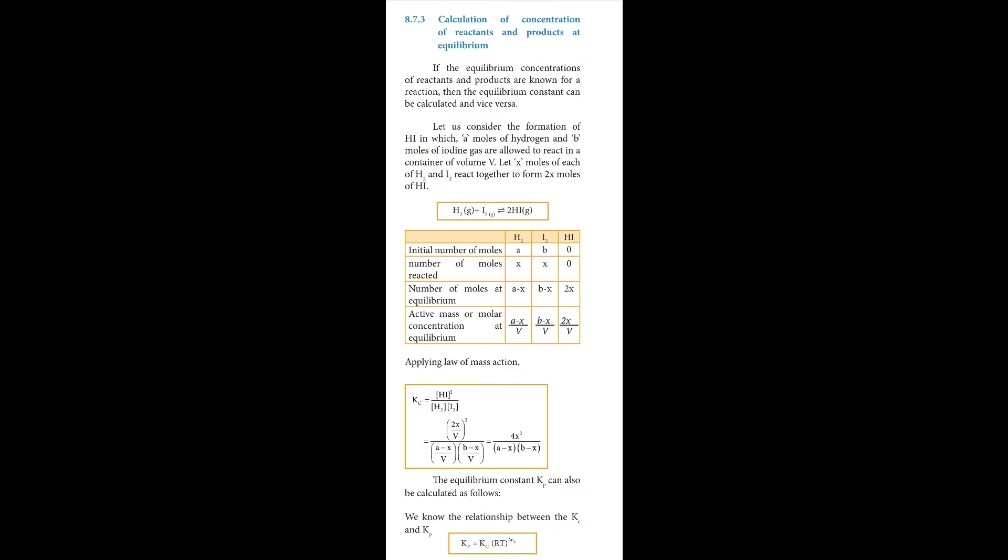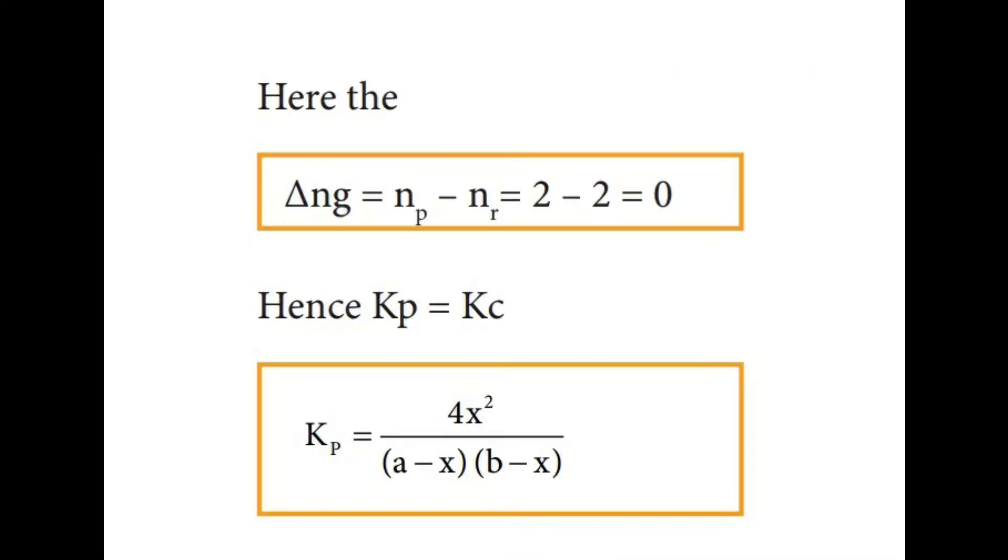Next is about HI formation. Derivation you can practice. Kp and Kc are equal, so you can derive the Kp and Kc. Here Kp is given as 4x² by (a-x)(b-x).